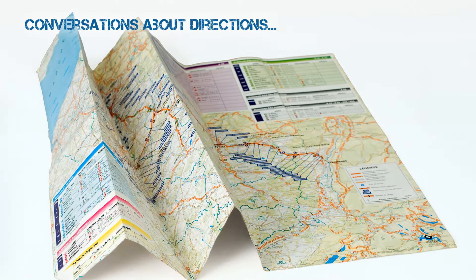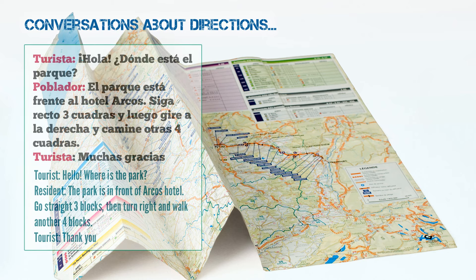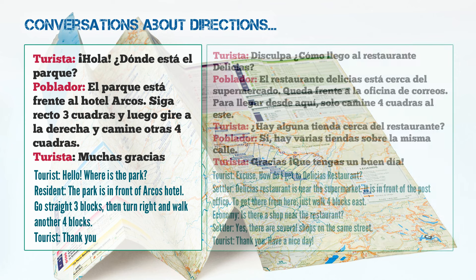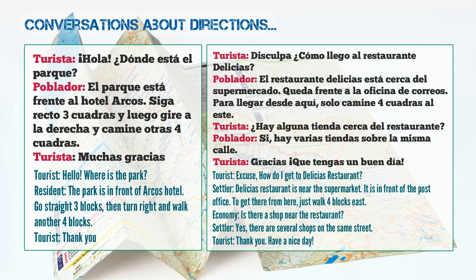Conversations about directions in Spanish — pidiendo y dando direcciones. Here are two examples of simple conversations using phrases and words covered in this video. First: Hola, ¿dónde está el parque? El parque está frente al hotel Arcos. Siga recto tres cuadras, y luego gire a la derecha. Y camine otras cuatro cuadras. Muchas gracias. Second: Disculpa, ¿cómo llego al restaurante Delicias? El restaurante Delicias está cerca del supermercado. Queda frente a la oficina de correos. Para llegar, solo camine cuatro cuadras al este.